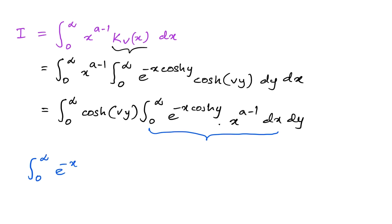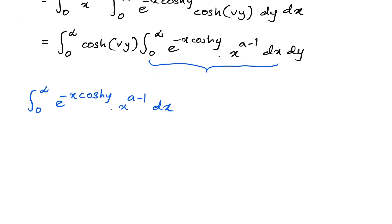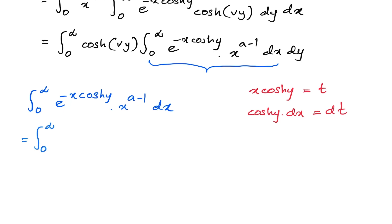We now evaluate the inner integral from 0 to infinity of e to the minus x·cosh(y) times x to the a minus 1 dx. To do this, we take the substitution t = x·cosh(y), where cosh(y) is a constant, so cosh(y)·dx = dt.